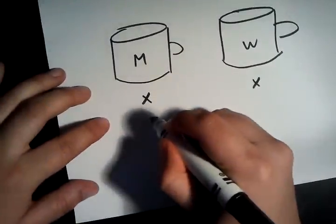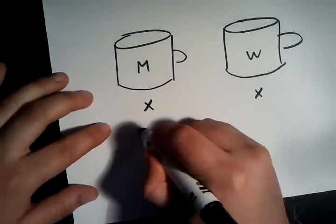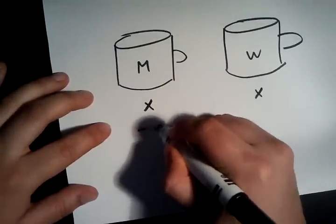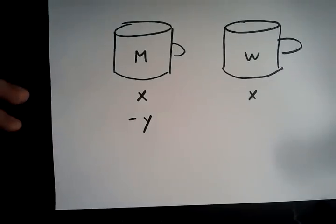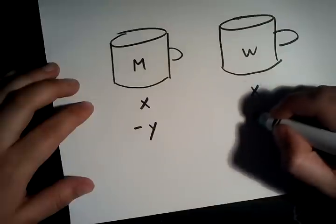Now you're going to have to take away a little bit from this one, a spoonful. So let's say minus y. Now y has to be smaller than x, of course. And now plus y.